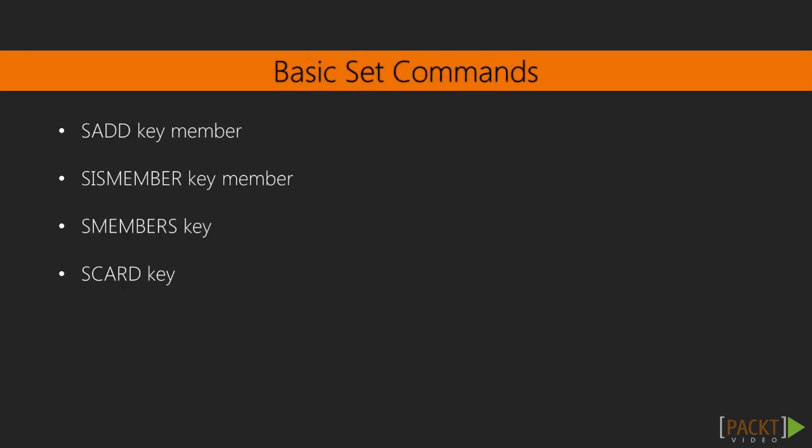Let's take a quick look at a couple of the basic commands we can use to interface with the set. A couple of key commands are adding members using sadd and determining membership using sismember. Both of these take the name of the set, which is your key, and the string member to add or check.